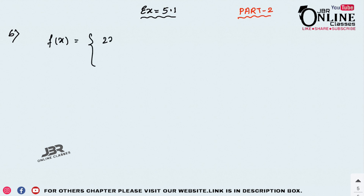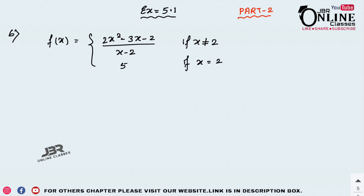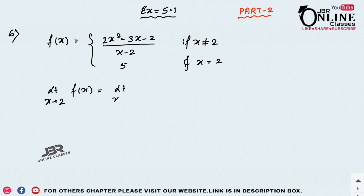Sum 6: Is the function f defined by f(x) = (2x² - 3x - 2) / (x - 2) when x ≠ 2, and 5 when x = 2, continuous at x = 2? I need to check the limit as x tends to 2 of (2x² - 3x - 2) / (x - 2).